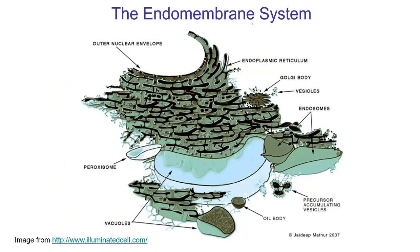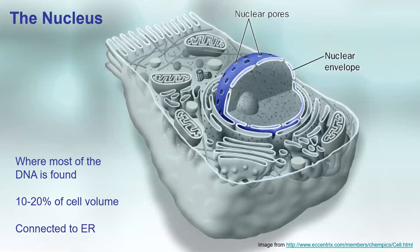Here's another image of the endomembrane system from a plant cell — I like this one because the scale is more accurate. You can see the Golgi body is a tiny little thing, and there's a giant central vacuole. If this were beetroot, this is where your pigment — your betacyanin — would be found. There are other plant-specific things like oil bodies. Let's talk about the nucleus, which is where we'll finish today. This is where DNA is found. In a eukaryotic cell, the nucleus can be quite large — roughly 10 to 20% of the cell volume. It's also connected to the endoplasmic reticulum, which we'll get to next day.